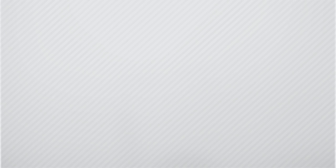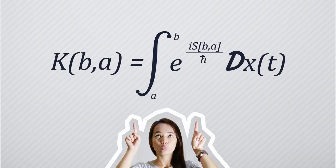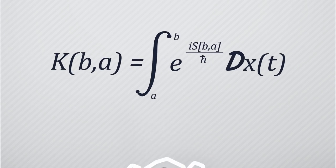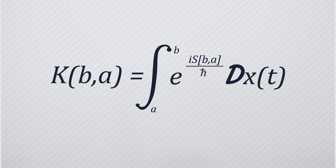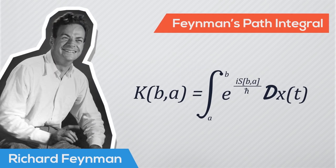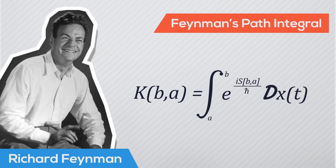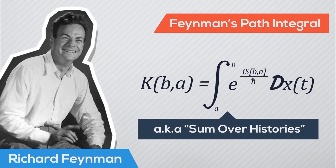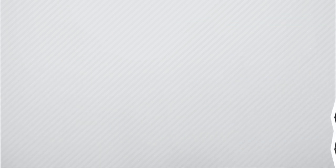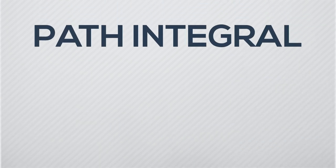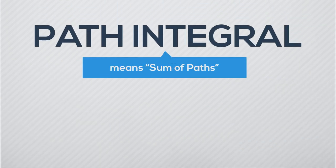Do they have a mind which tells them to prefer one path over the other? The answer to our questions is this equation right here. I'll explain it in simple terms. This equation is Feynman's path integral formulation of quantum mechanics. It's also called the sum over histories method. Path integral literally means sum of paths.